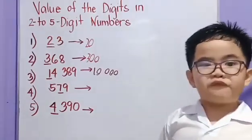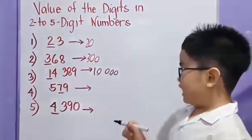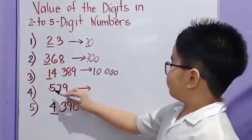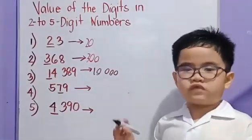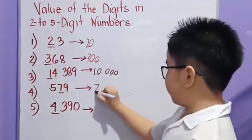Let's have number 4. Let's read 579. So, the value of 7 is 70.